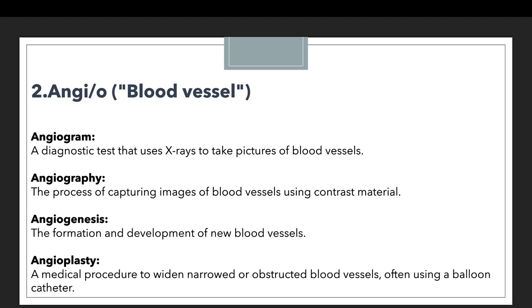Angiogenesis refers to the formation and development of new blood vessels. Whenever new blood vessels begin forming or developing in the body, this process is known as angiogenesis, starting with the prefix angio. Another example is angioplasty, a medical procedure to widen narrowed or obstructed blood vessels. In a scenario where there is a blockage in a blood vessel, angioplasty is performed to widen the narrowed or obstructed area, often using a balloon catheter.